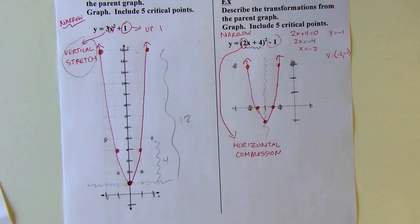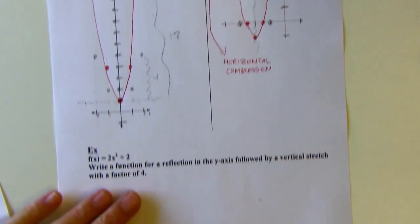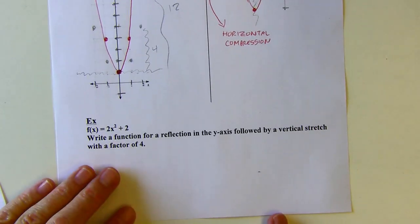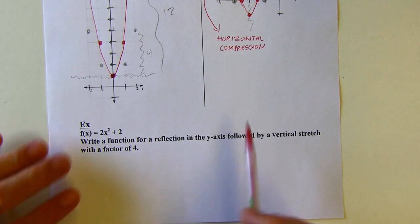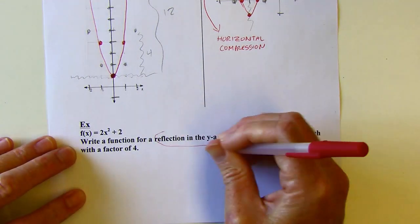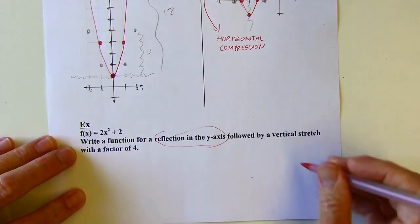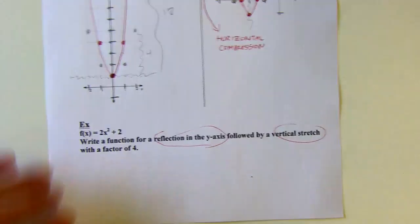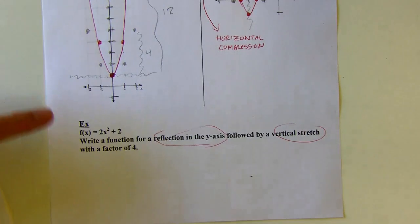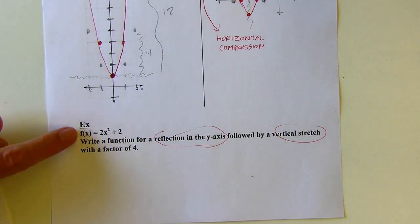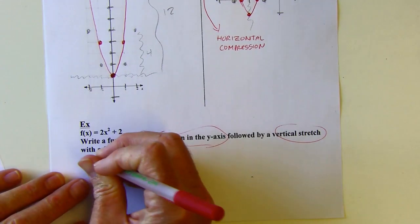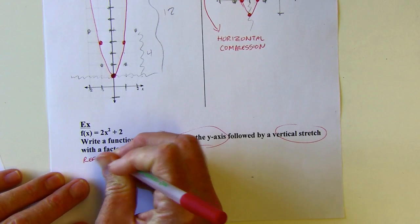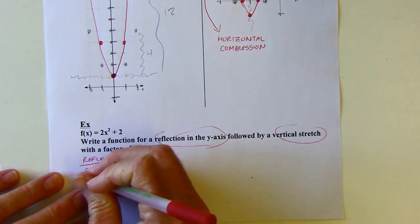Now let's move on to writing a function. We're going to write a function for a reflection over the y-axis, followed by a vertical stretch. I'll do these piece by piece. Here's function f — I'll do my reflection first, and call the result function g.